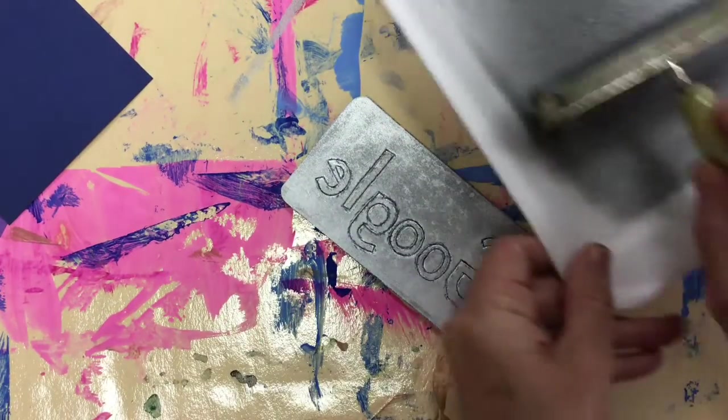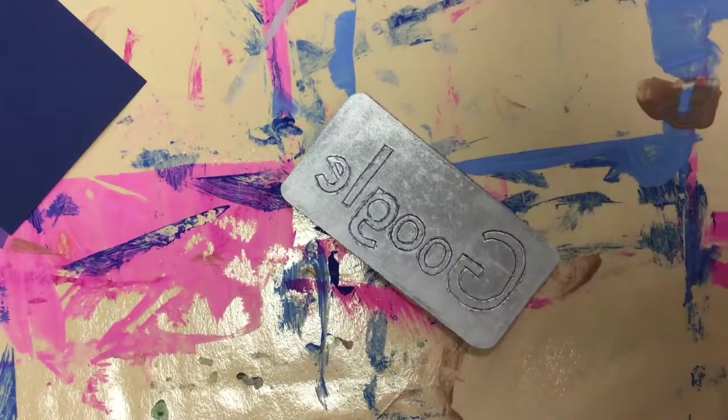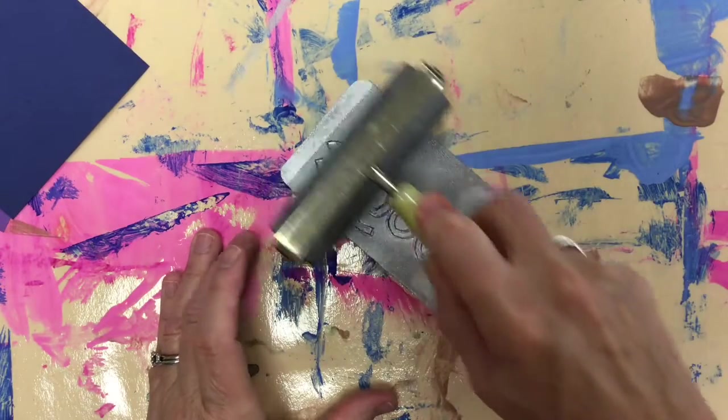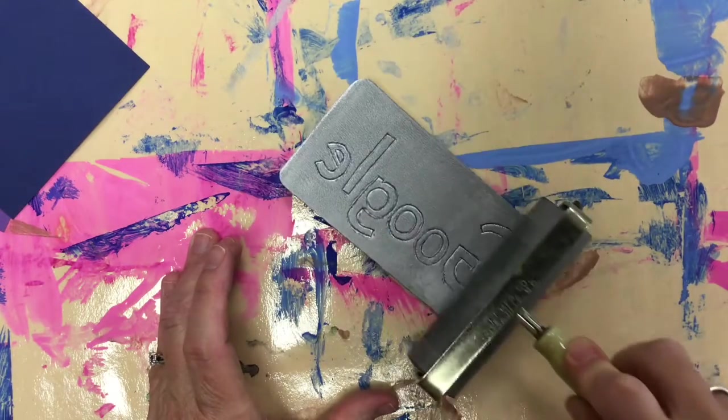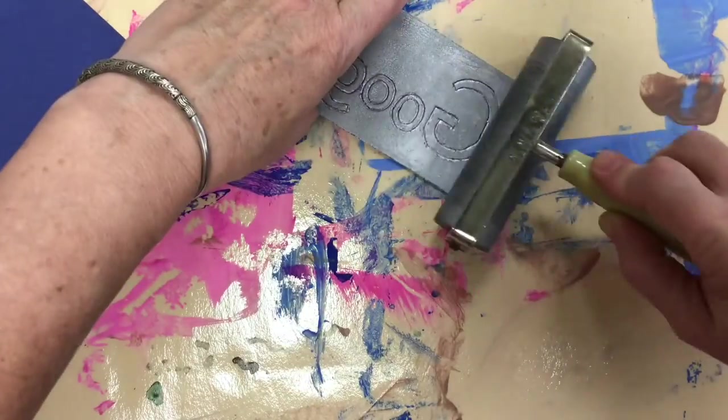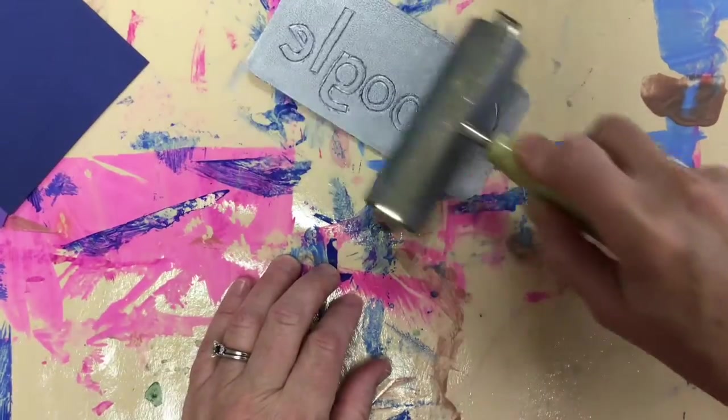You've got your printing plate back again. You're going to add a little more ink because you've just taken some ink off of it and so you need to give just a nice new thin layer again. So make sure it gets in all the little spots.